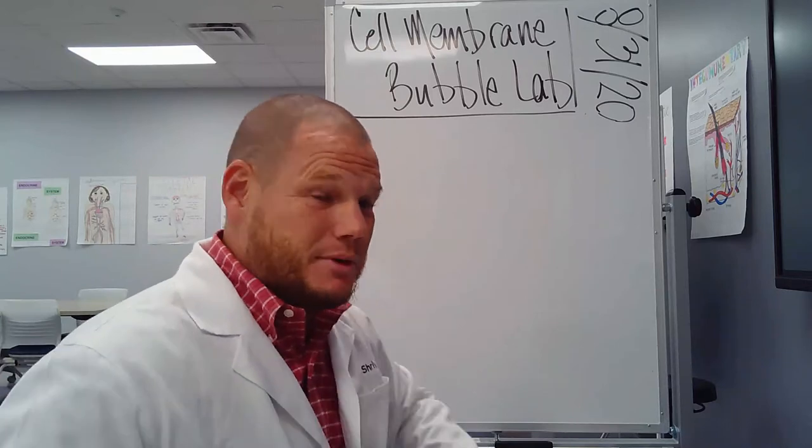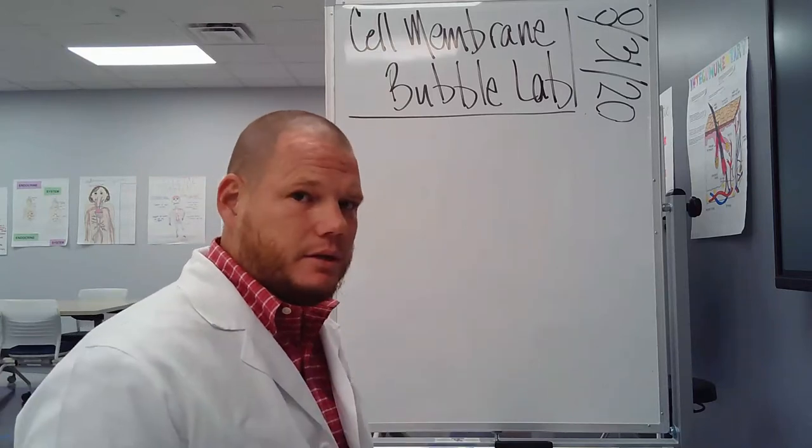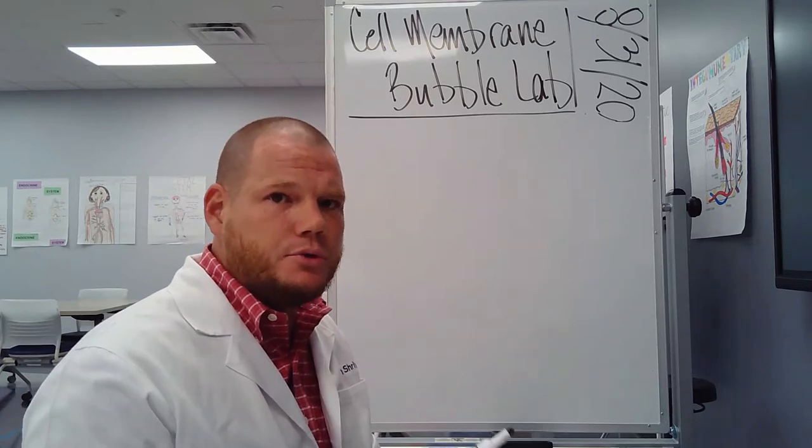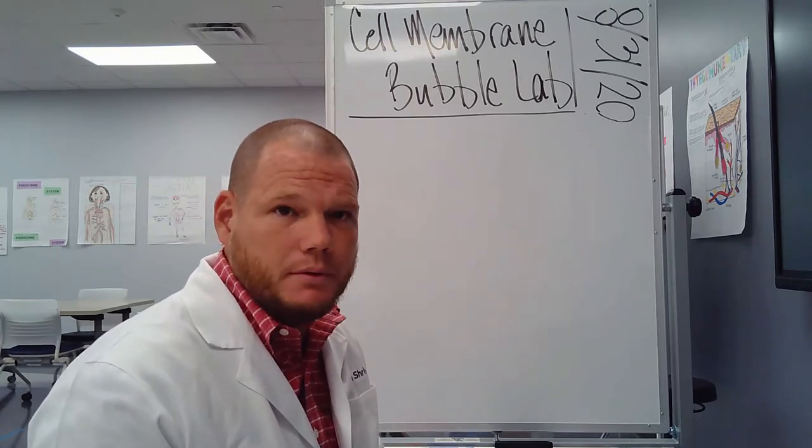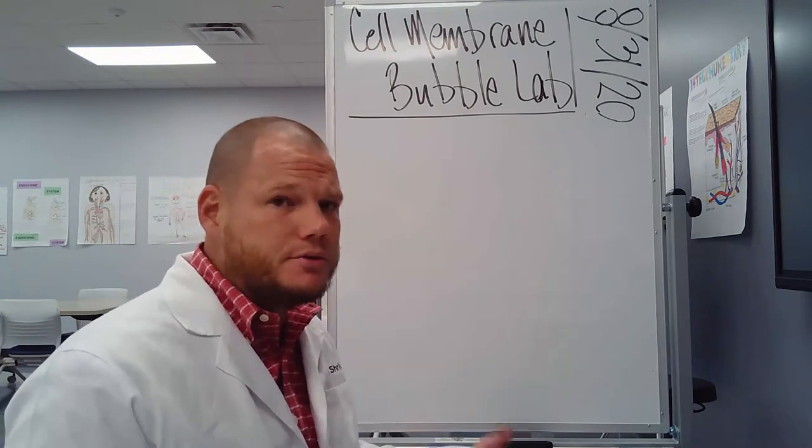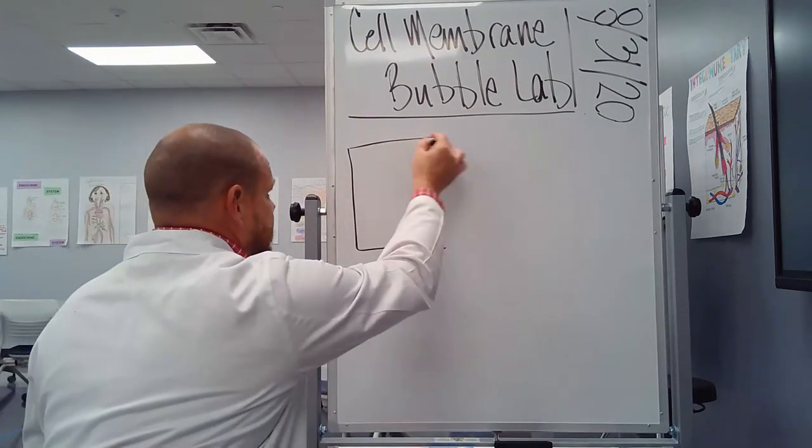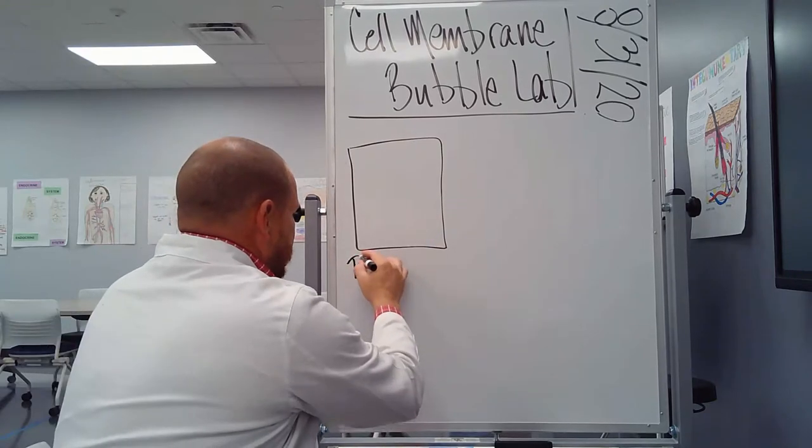Follow along with me, take notes with me. So first thing we need to look at is how is a cell membrane built that is similar to the way in which a soap bubble membrane is built. So the molecules are similar. So we'll draw a little box here and we'll put in here the phospholipid bilayer.